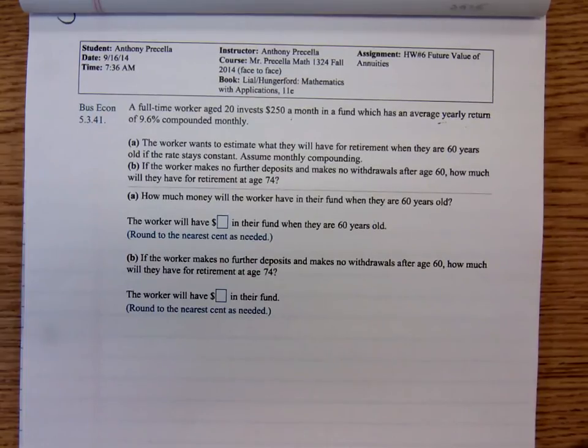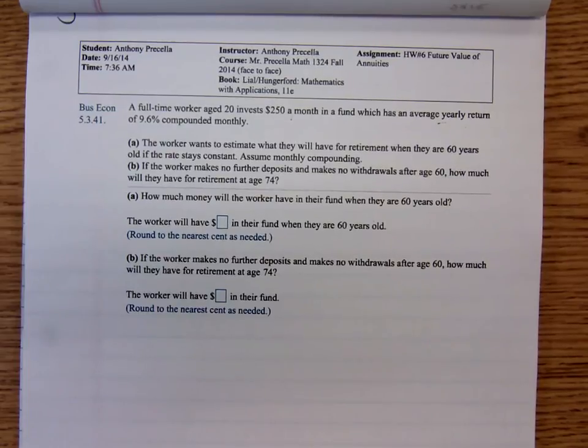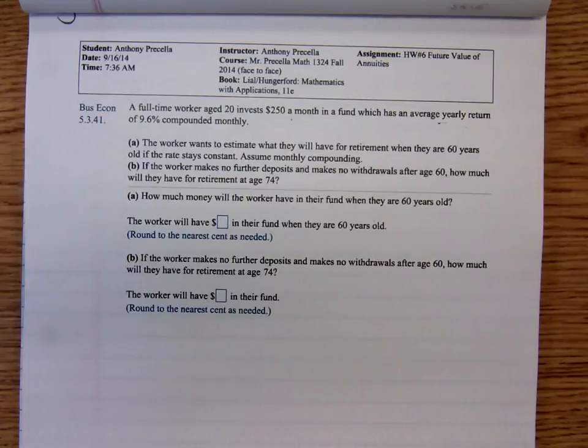A full-time worker aged 20 invests $250 a month in a fund which has an average yearly return of 9.6% compounded monthly. The worker wants to estimate what they will have for retirement when they're 60 years old if the rate stays constant, assuming monthly compounding.